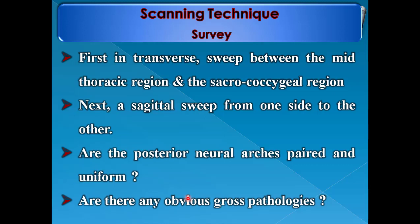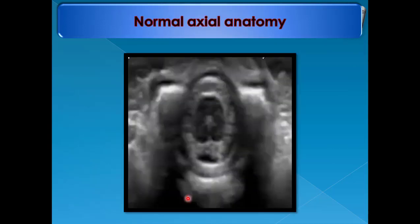Scanning technique: we start with a survey followed by detailed examination. The survey takes only one to two minutes. First, a transverse sweep from the mid-thoracic region to the sacrococcygeal region; next, a sagittal plane sweep from one side to the other. The aim of the survey is to answer two questions: are the posterior neural arches paired and uniform, and are there any obvious gross pathologies?